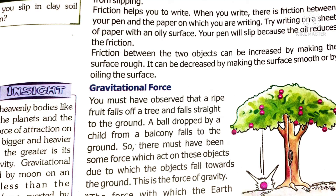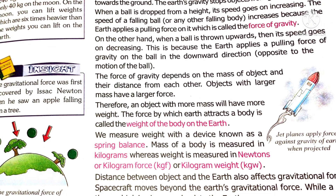Mass and weight are two different terms. The mass of a body remains constant whether you go to space or to the moon. But the weight of the body changes if you go to another planet, moon, or space, because weight depends upon the gravitational pull of the other body. If you go to the moon, your weight lessens by six times because the moon's pull is six times lesser than the earth's. For example, if your weight is 60 kg on Earth, on the moon it will be only 10 kg.